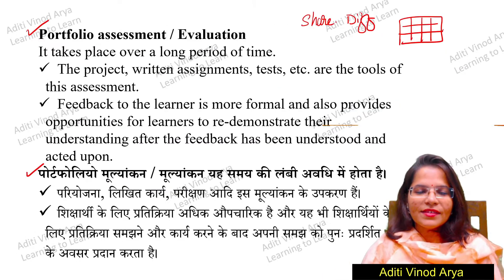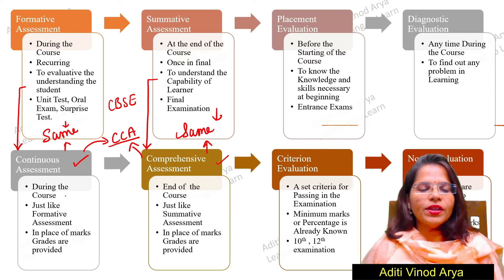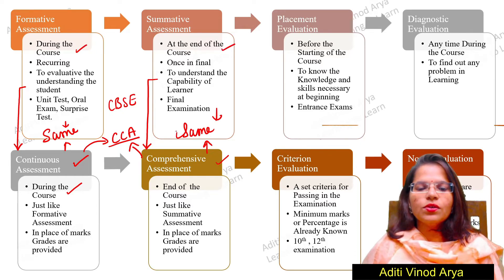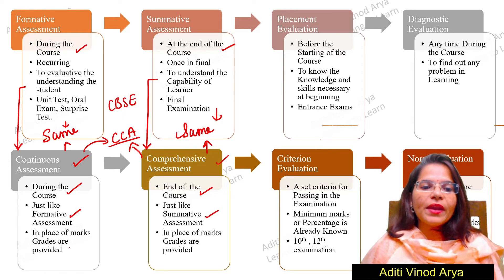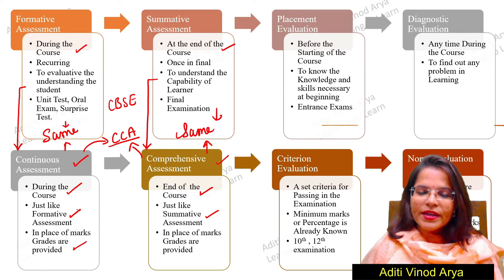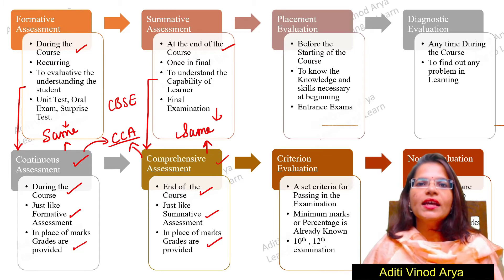So if you want to see the difference: formative happens during the course, summative at the end of the course — similarly, continuous happens during the course and comprehensive at the end. This is just like formative assessment and this is just like summative assessment. The key difference is that in place of marks, grades are provided — both in continuous and in comprehensive. That is the only difference; everything else is the same.